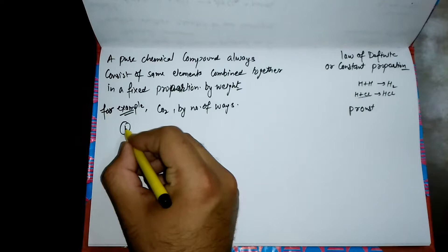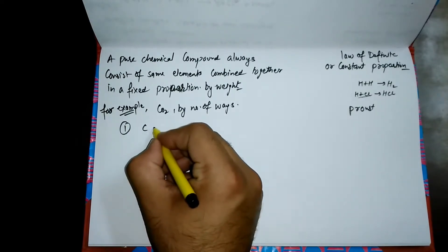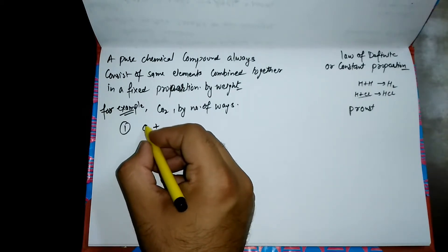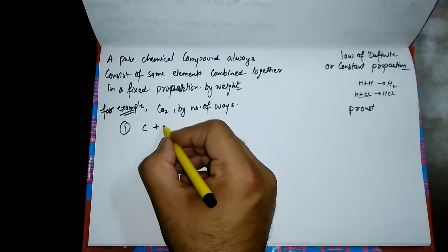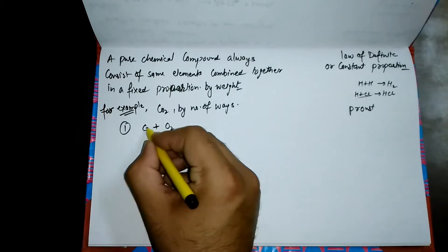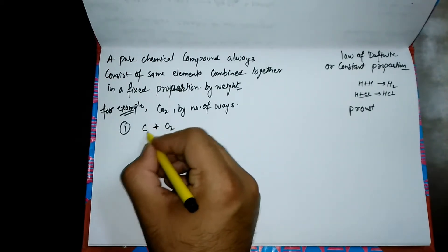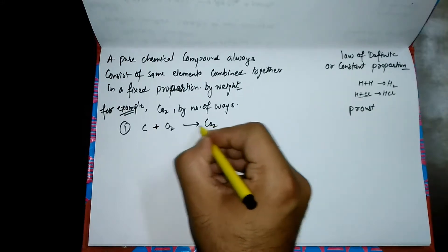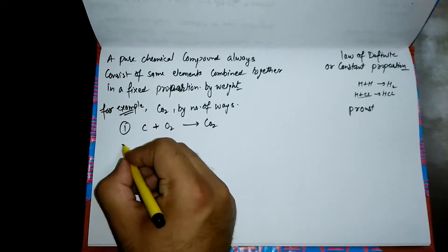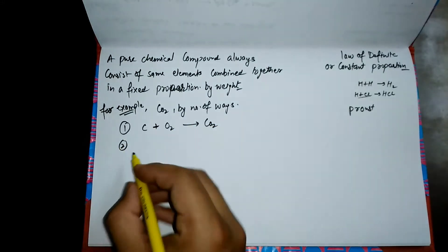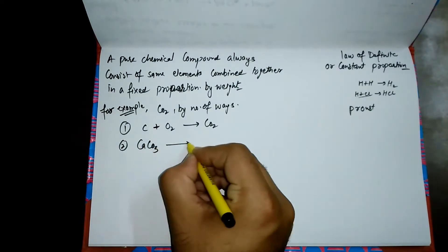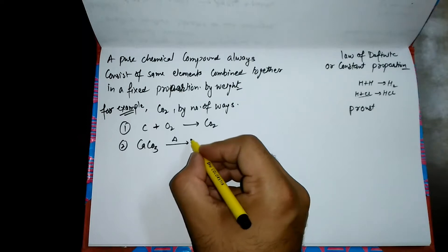Let's take an example. The first method: we can burn the coke in air, or we can say pencil graphite or pencil lead in air, it becomes CO2.